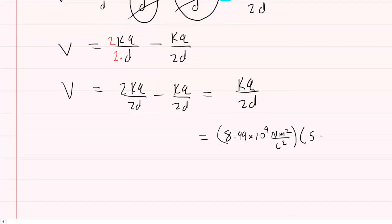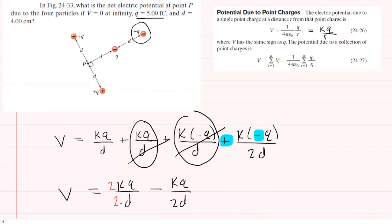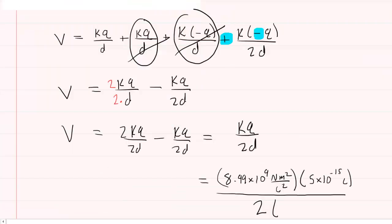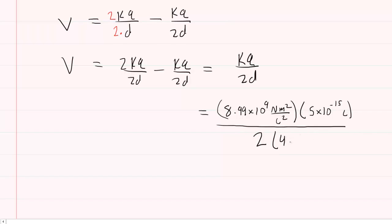So you'll have 5. And then to convert femtocoulombs into just coulombs, you multiply it by 10 to the minus 15. And then we divide by 2 multiplied by the distance value. And that distance value d was equal to 4 centimeters. Be careful, you want to convert the 4 centimeters into meters so you'll multiply it by 10 to the minus 2.